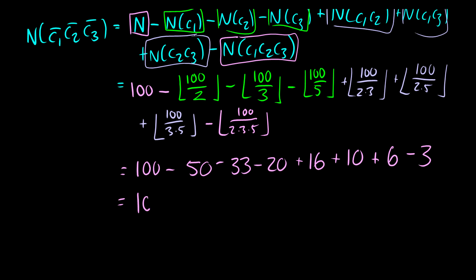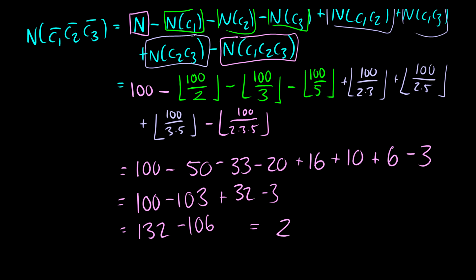So this is 100 minus 103 plus 32 minus 3, which is 132 minus 106, giving a grand total of 26 numbers less than 100 that are not divisible by 2, 3, or 5. It seems complicated at first, but if you're given the same question for numbers less than 200, not divisible by 2, 5, or 7, it's the exact same process — you can just copy and paste with different numbers.